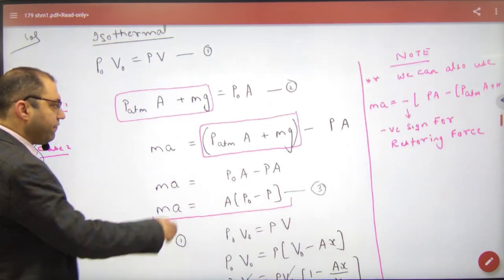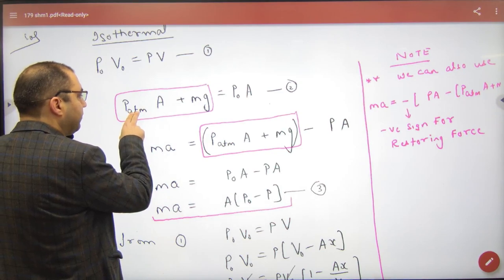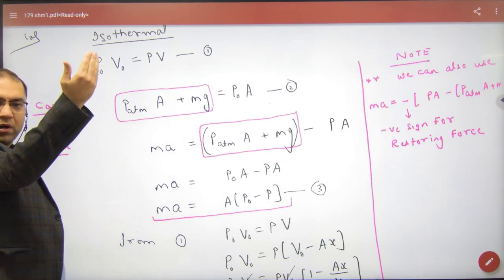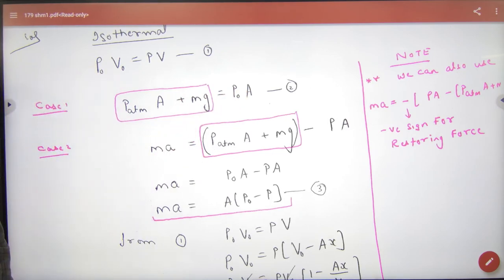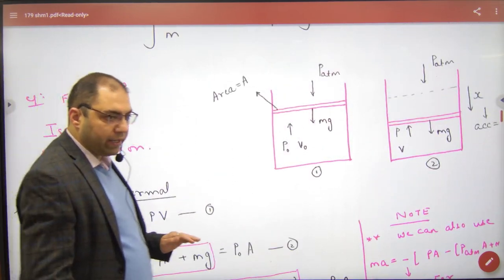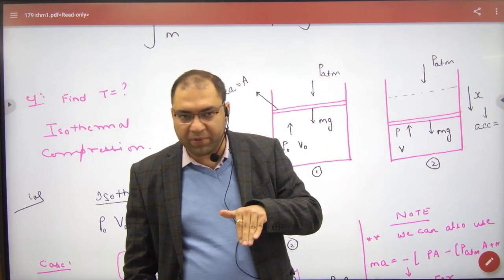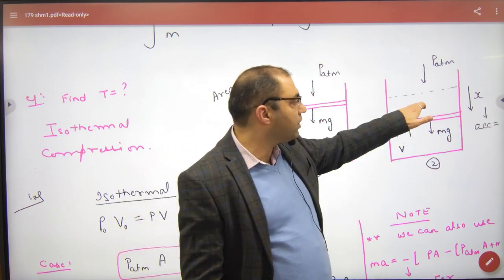There are two forces from above: P-atmospheric area and Mg. The force from below is P-naught into A. The first question is clear - it is in equilibrium. Now what did I do? I went and displaced it by x. The piston is displaced by x. How much volume is covered?